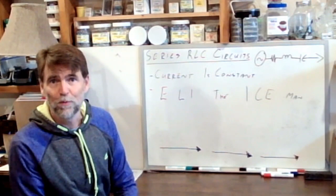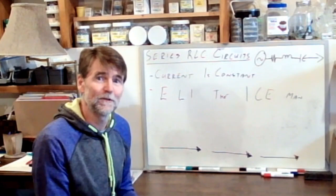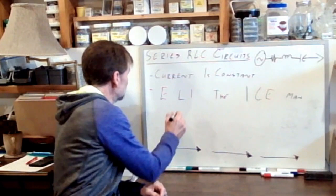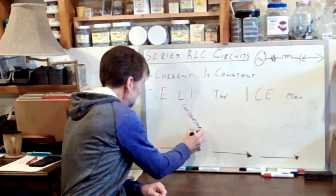Now what's this next point all about? Eli the Iceman, it's a kind of mnemonic that helps us figure out where we draw all of our vectors. Let's see what these letters represent. L, the capital L, represents inductance.